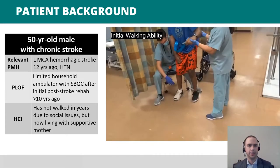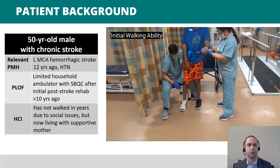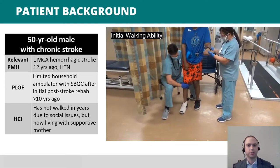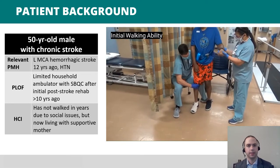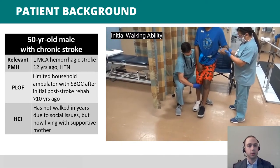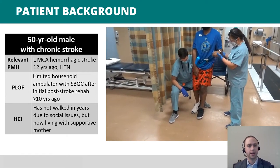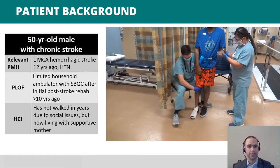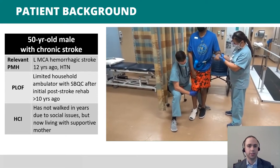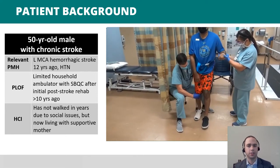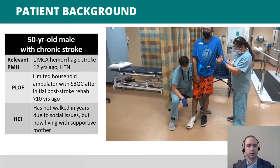The patient in this case is a 50-year-old male who had a left MCA stroke 12 years prior to us evaluating him in our outpatient clinic. After his stroke, he was able to achieve a limited household ambulator status using a quad cane. However, in recent years, he has not walked due to some social issues and subsequent functional decline, and he just recently moved in with his very supportive mother.